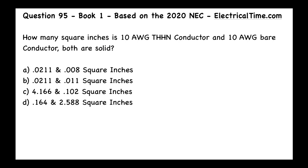This is question number 95 from book number one, based on the 2020 NEC from electricaltime.com. How many square inches is a 10 AWG THHN conductor and a 10 AWG bare conductor — both are solid? The choices are: A) 0.0211 and 0.008, B) 0.0211 and 0.011, C) 4.166 and 0.102, or D) 0.164 and 2.588 square inches.